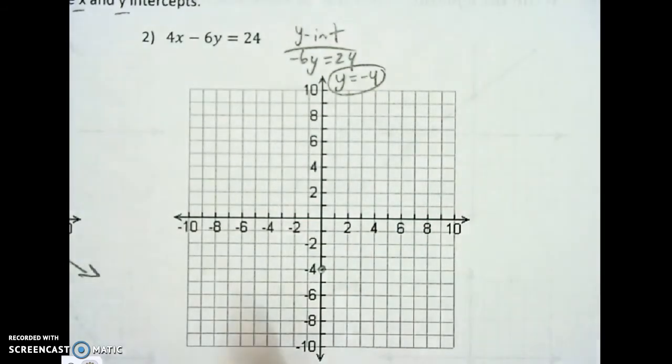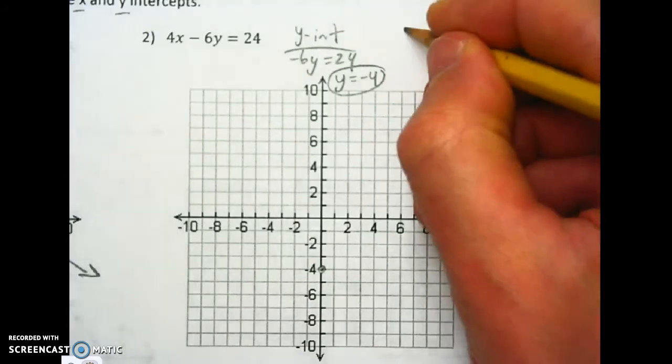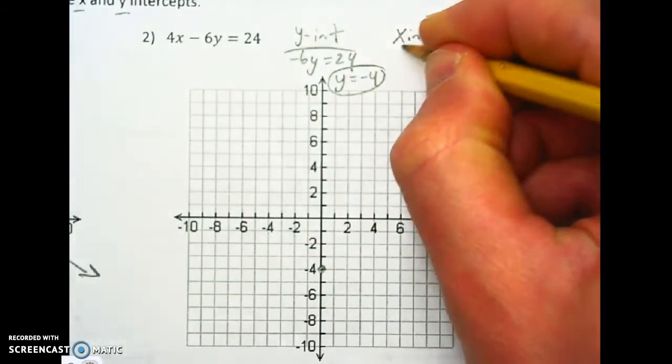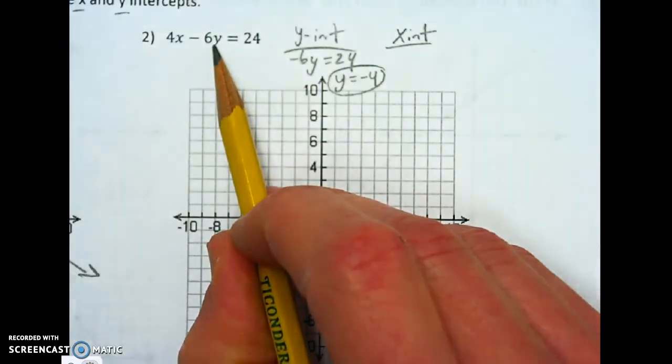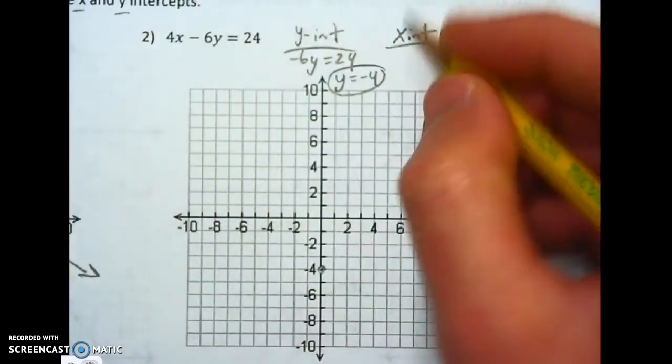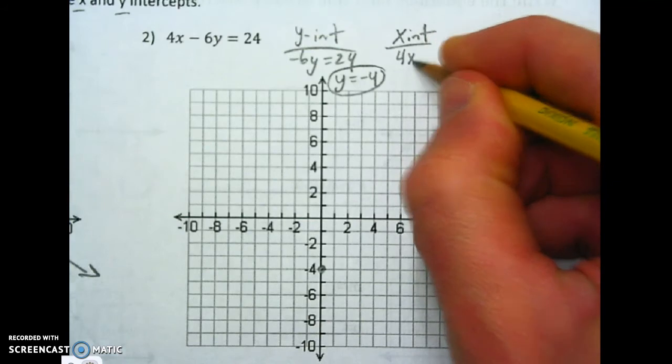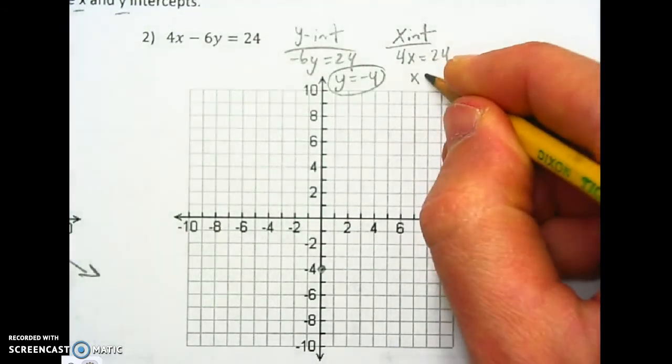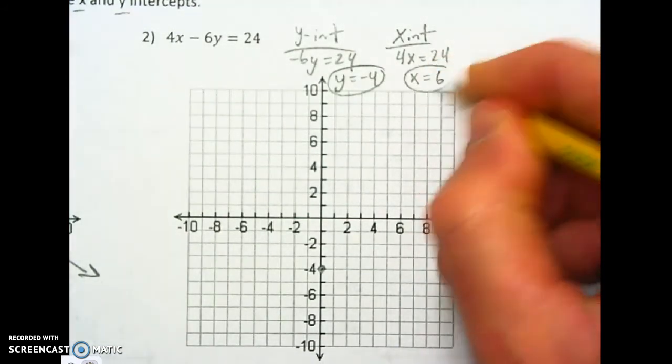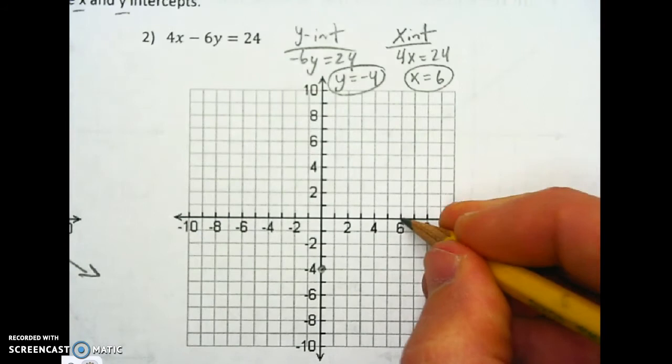Same thing here. If we are on the x axis, finding the x intercept, all the y values anywhere on this x axis are 0. So to find the x intercept, I plug in a 0 for y. So this negative 6y goes away, and I just have 4x equals 24. Divide both sides by 4, and I get my x intercept, 6. So I'm going to go to 6 on the x axis.